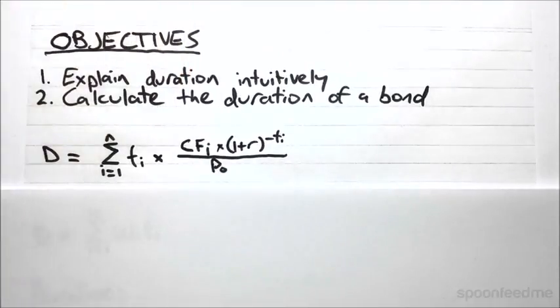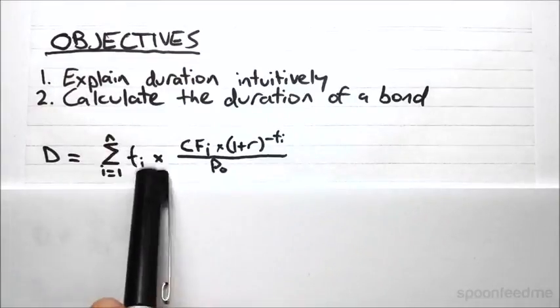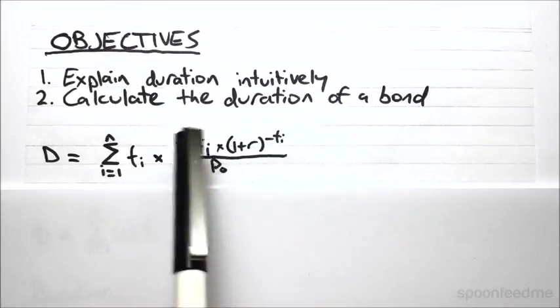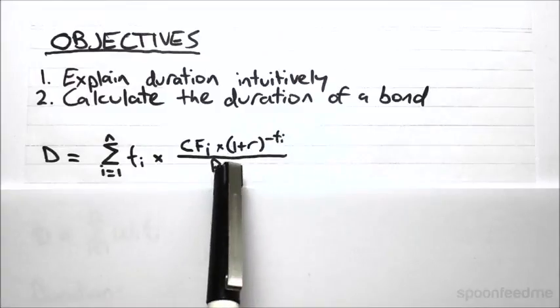So here we've got our duration formula as we just worked out, and you may notice that there's two main parts to it. So there's the time until each cash flow is received, and then there's this fraction here. The cash flow discounted divided by the price.